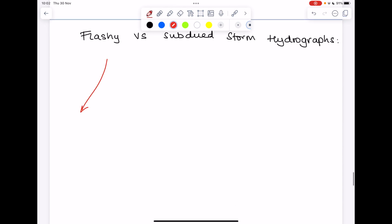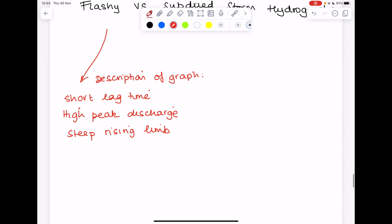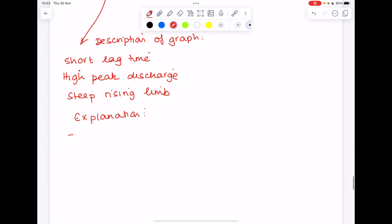So our flashy storm hydrograph, we know we're going to have a short lag time. We'll have a high peak discharge and a steep rising limb. So those are all descriptions of the graph we would see. Why do we get these various features that we see on the graph? Well, for a number of reasons.